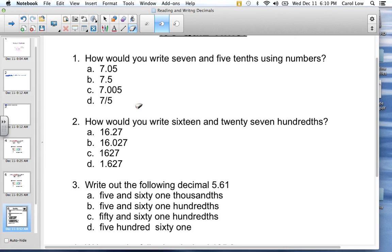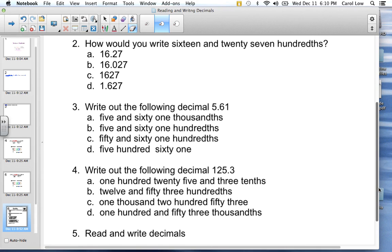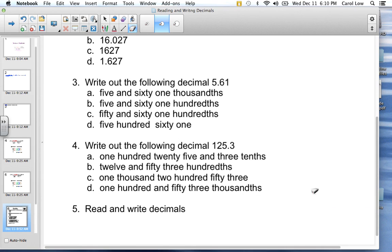Number three: write out the following decimal, five and sixty-one hundredths. Ooh, I shouldn't give you the clue on that one. Number four: you're going to read this number and figure out which one of these is written out.